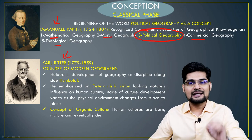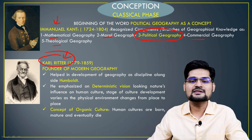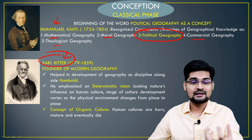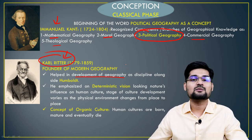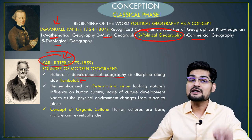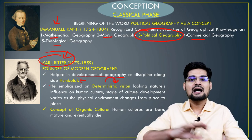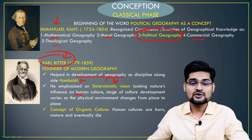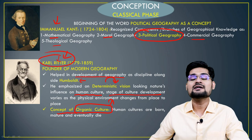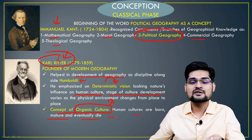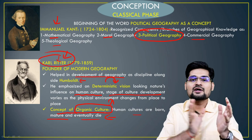Other scholars like Karl Ritter and Alexander von Humboldt widened the horizon of geographical knowledge. Karl Ritter was the foundation stone of modern geography, helping develop it as a discipline. After his death in 1859, the first geography departments were established in Europe. Humboldt worked extensively on geography with a deterministic vision — examining how man is influenced by nature. Ritter's work covered human culture, stages of cultural development, and the concept of organic culture — that human cultures are born, mature, and eventually die like a natural cycle.